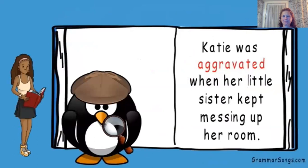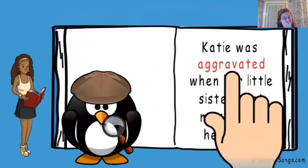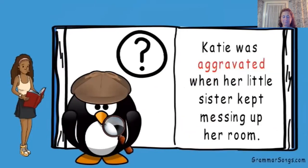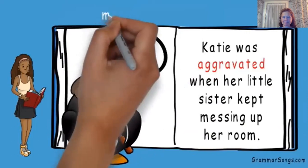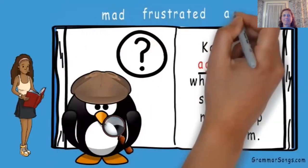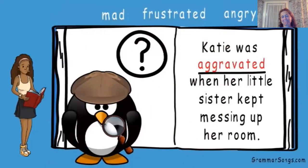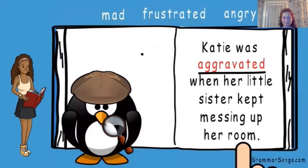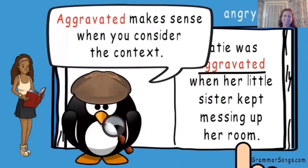What clues do you see? We know Katie was something, so we need to read the rest of the sentence to figure this out: when her little sister kept messing up her room. So what could Katie be? Mad? Frustrated? This word starts with an A. Angry? Aggravated? Katie was aggravated when her little sister kept messing up her room. Aggravated makes sense when you consider the context.